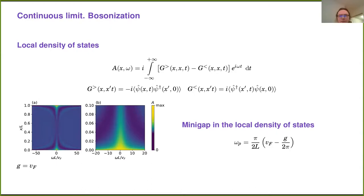In conclusion, we have demonstrated the emergence of robust Majorana-like edge modes in a many-body quantum system without superconductivity, and rationalized this using bosonization formalism and matrix product states numerically. Thank you for your attention.